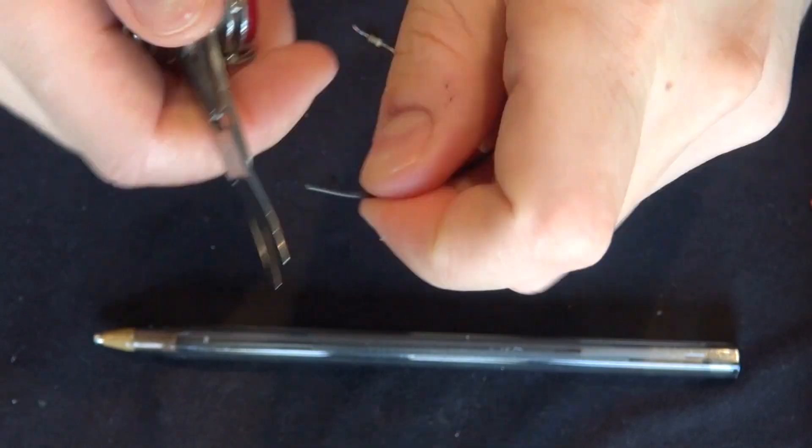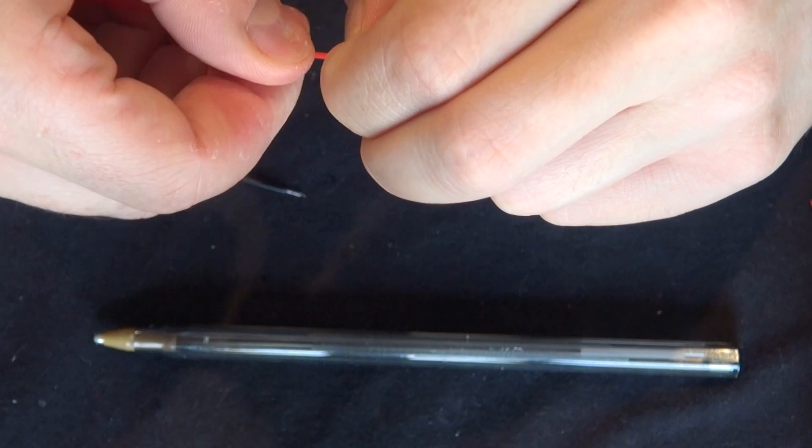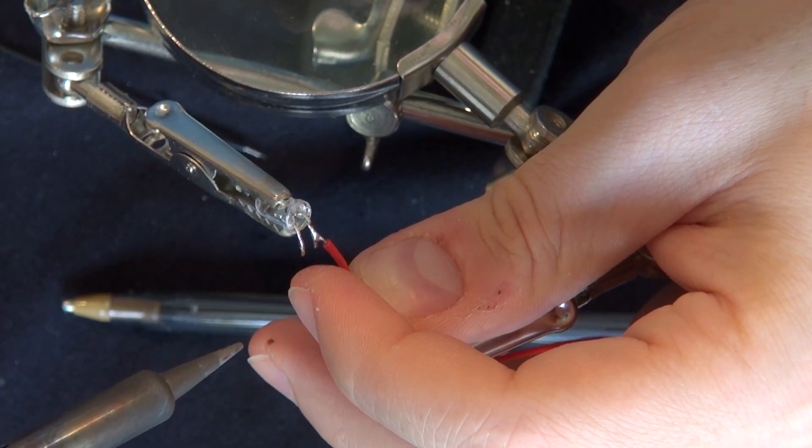First, you're going to start by removing the insulation on both ends of these wires. Then go ahead and solder the red wire to the positive or anode of the LED.